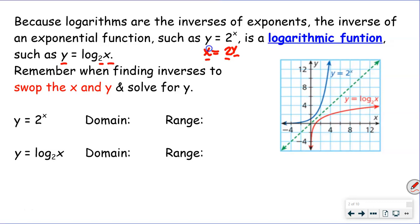Remember, when finding inverses we swap the x and y, and then solve for y. So when we were graphing y = 2^x — that's an exponential — we're looking at the blue function here. This is the function we're talking about: y equals 2 to the x power.